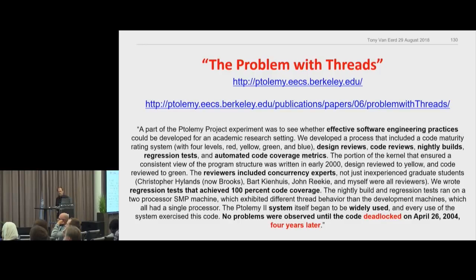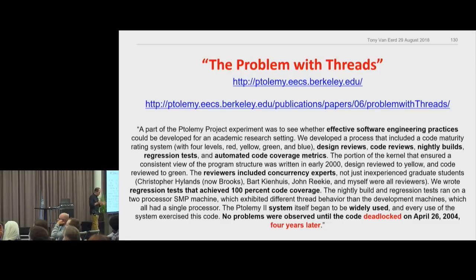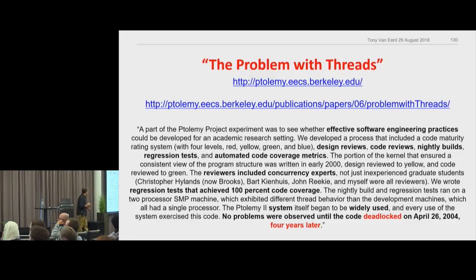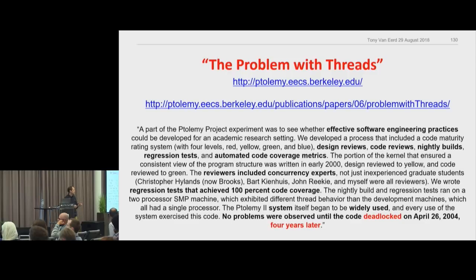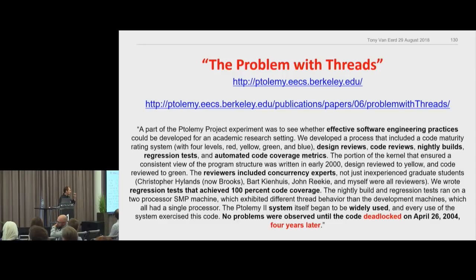In my last FCD example — this isn't even a lock-free example. Berkeley wrote an OS — basically a school project — and one of the main parts was to do all best practices: design reviews, code reviews, nightly builds, regression tests, automated code coverage — 100% code coverage for the kernel parts. They had experts come in and review tricky code. It ran for three or four years before it deadlocked. The bug was there all along. No one saw it.